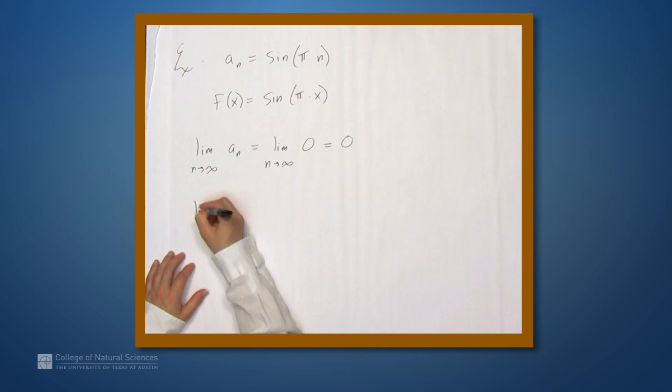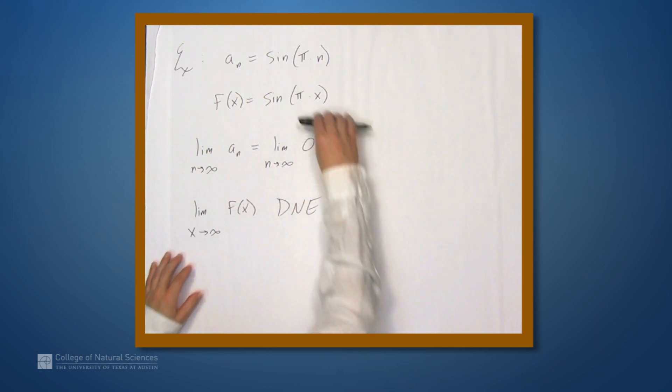On the other hand, the limit as x approaches infinity of f of x does not exist. So in this case, we have this limit that doesn't exist, but the limit of the sequence does exist, and it's zero.